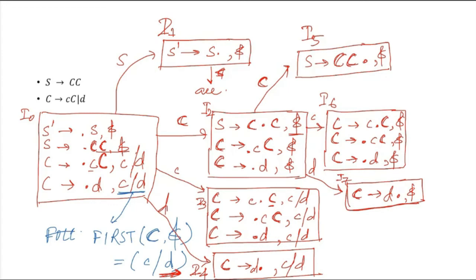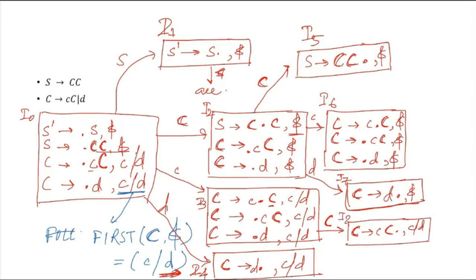From I3, after the dot capital C is coming, so for this capital C we take a move. It gives us capital C to small c capital C dot, with lookahead c or d — nothing needs to be added here, so I name this I8. For small c coming after the dot in I3, it produces a self-loop for small c. And for d it goes to I4.